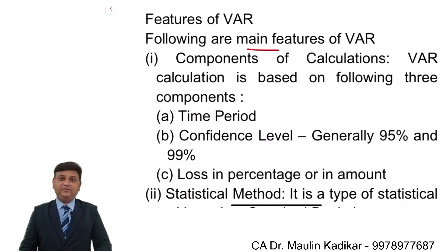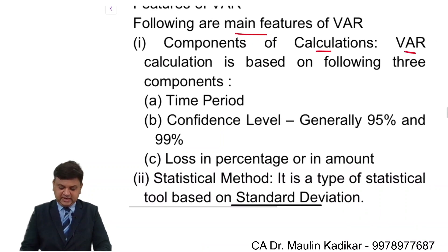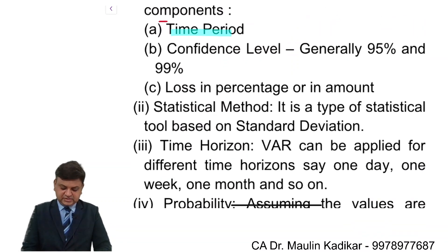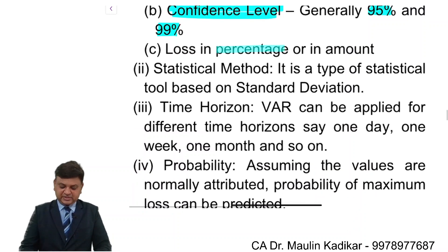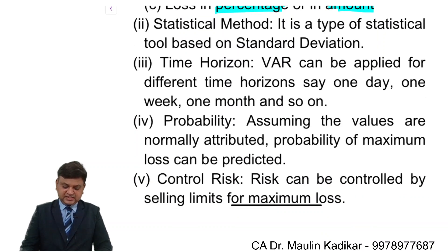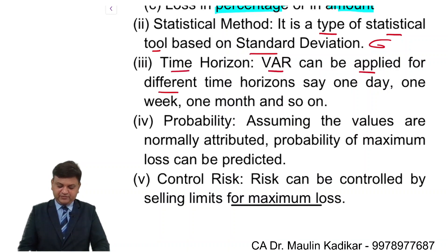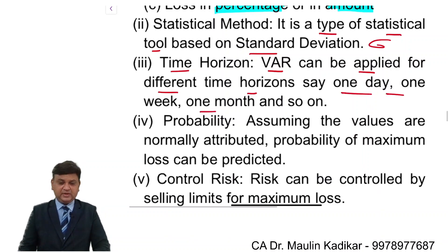The main features of VAR are as follows. First, components of the calculation: VAR calculation is based on three components — the time period, the confidence level (generally 95 to 99 percent), and loss in percentage or amount terms. Second, the statistical method: VAR is a statistical tool based on standard deviation. Third, time horizon: VAR can be applied for different time horizons — one day, one week, one month, and so on.